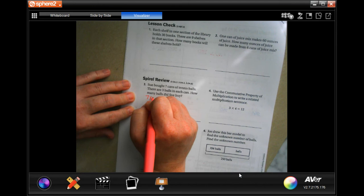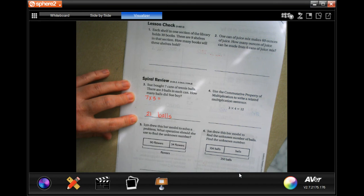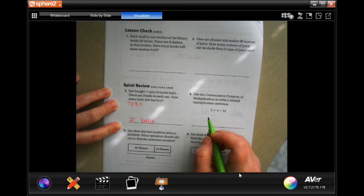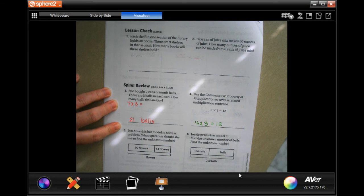Well, 7 times 3, that's 21 balls. Okay, use the commutative property of multiplication to write a related multiplication sentence. Well, if all we're doing is moving the numbers around, which is what commuting is, then I'm going to put 4 times 3 equals 12.